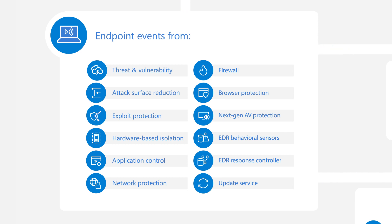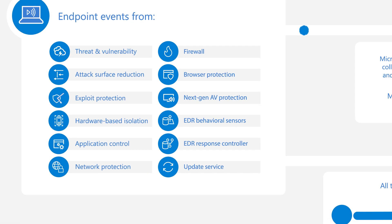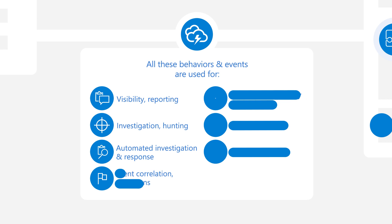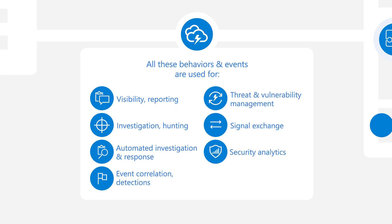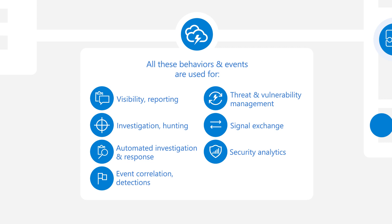Security teams must turn on and configure some of these controls before they start generating events. Customers can use that near real-time data for visibility, reporting, investigation, and threat hunting. Additionally, the service uses that sensor data for correlation, breach detection, visibility, security analytics, and signal exchange with other Microsoft 365 Defender services.